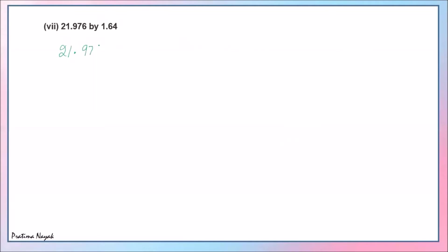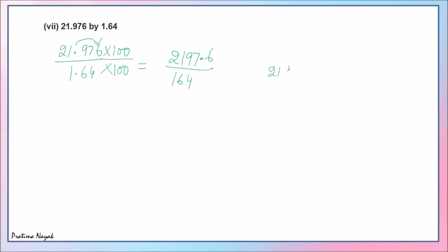Part 7: 21.976 divided by 1.64. Two digits after the decimal, so multiply by 100. We get 2197.6 divided by 164. This is a big number; you can simplify by cancelling with 4 to make division easier. Dividing: 164 into 2197 gives 13. Put decimal, bring down 6. 164 fours are 656, so the answer is 13.4. Actually working through carefully, the answer is 13.4. Note: cancelling common factors first makes division easier.